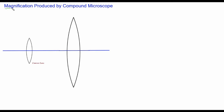Let's discuss about the magnification produced by the compound microscope. Under this category, there will be 2, 3, and 5 marks questions. If they ask for 2 or 3 marks, they may ask you to just draw the ray diagram representing the final image produced by the compound microscope. For 5 marks, they can ask you to derive the magnification produced by the compound microscope.